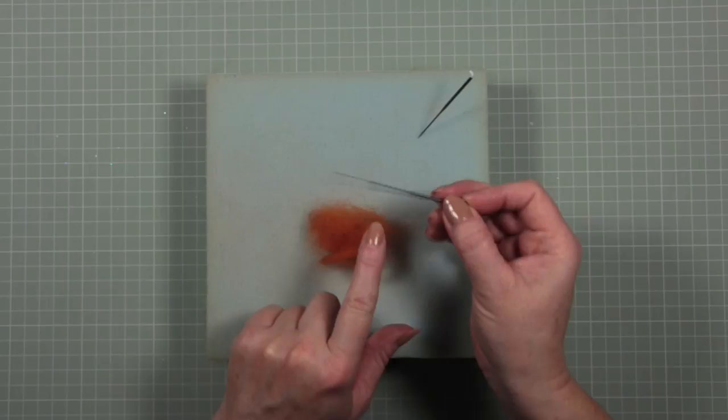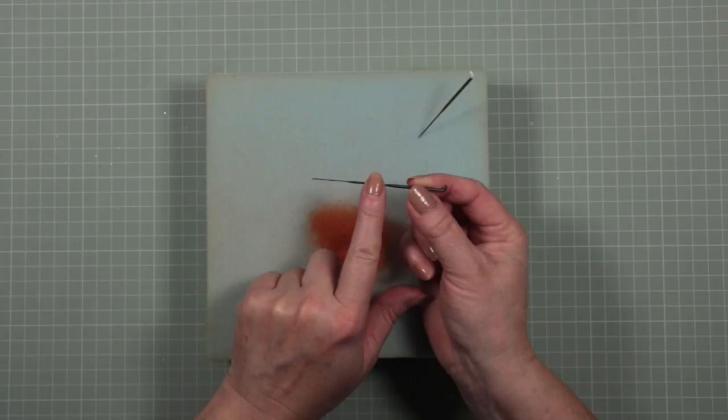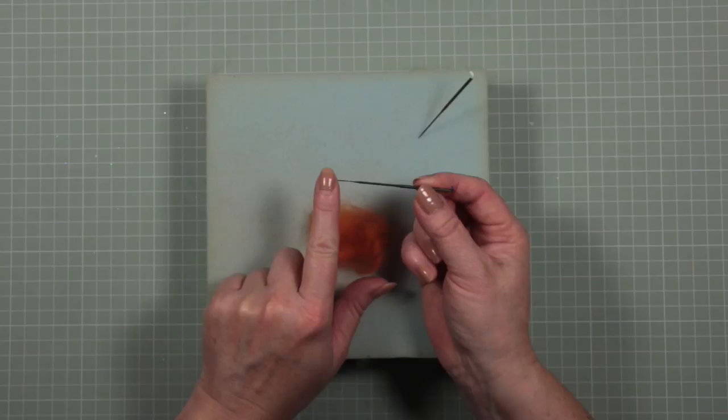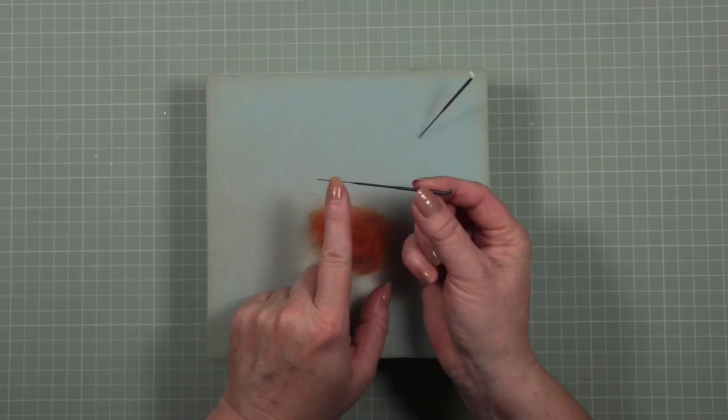The needles are quite different to any standard needle because there are barbs at the bottom, maybe half inch of this needle. Now if I run my finger this way I can't feel them. If I run my finger this way they jerk, there's resistance, because the barbs run in this direction.